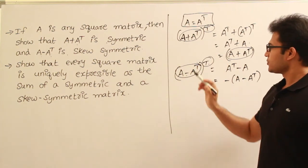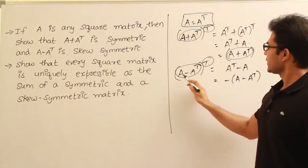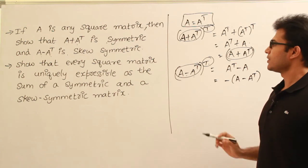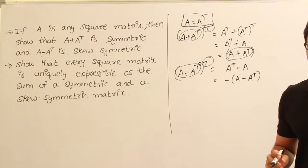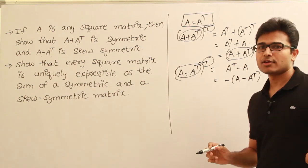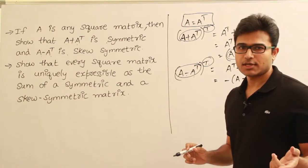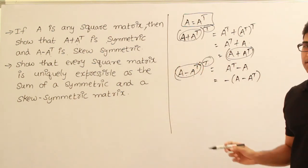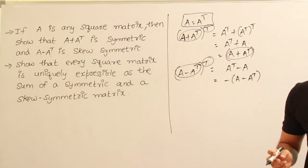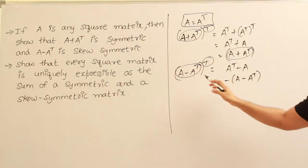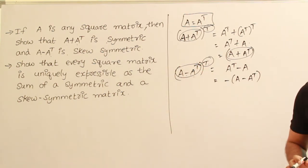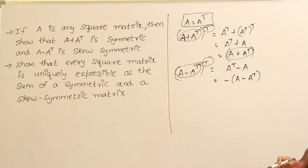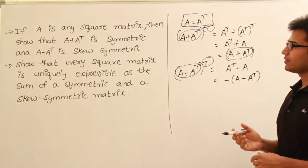So, A plus A transpose is symmetric and A minus A transpose is skew symmetric. This means if A is any square matrix, then A plus A transpose is a symmetric matrix, and A minus A transpose is a skew symmetric matrix.